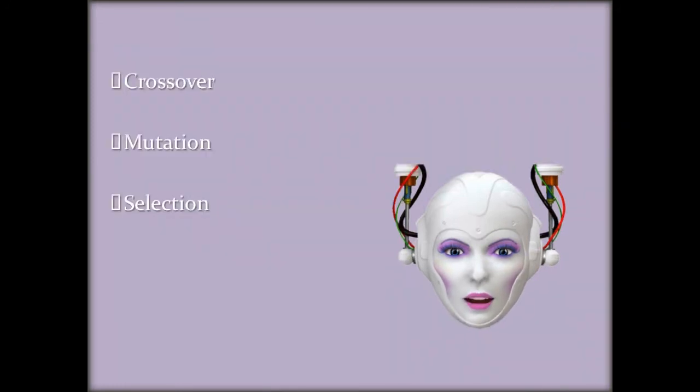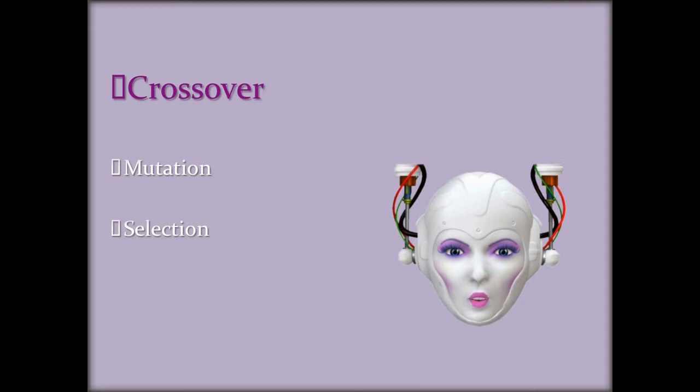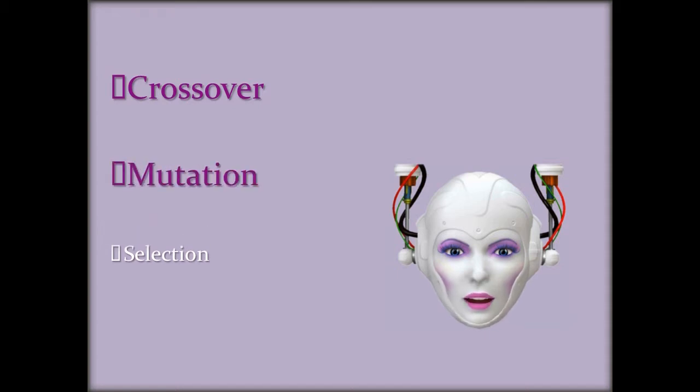When two organisms mate, the resultant offspring has chromosomes from both its parents. This is called crossover. Occasionally, the offspring's gene might be mutated. This means that the elements of DNA are a bit changed. Here, we have to note that not all organisms survive to reproduce, while some organisms might reproduce more than others.